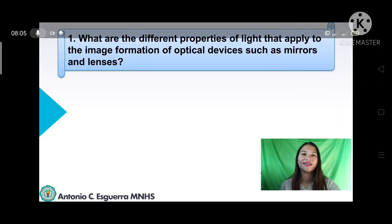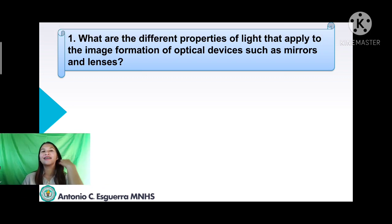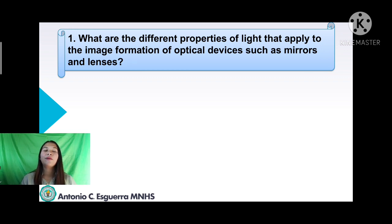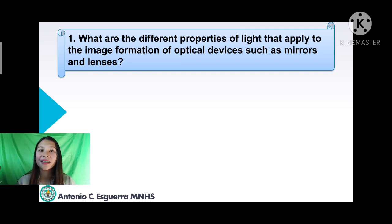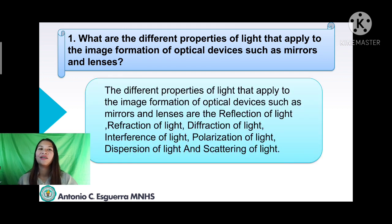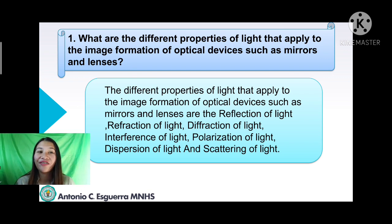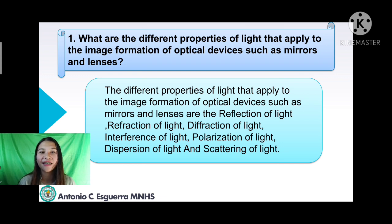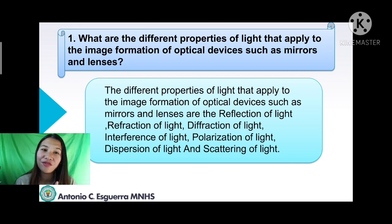Let's answer the first question: What are the different properties of light that apply to the image formation of optical devices such as mirrors and lenses? The answers are reflection, refraction, and also diffraction, interference, polarization, dispersion, and scattering. If you answered reflection and refraction, you are correct — you have two points.